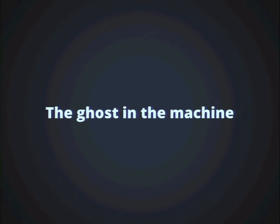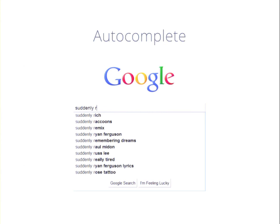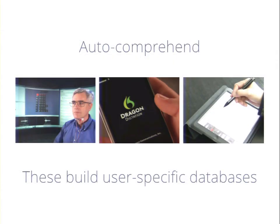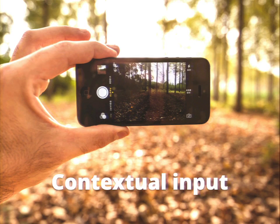Additionally, there's a lot happening around the intelligence of the device or application. We have auto-complete, auto-correct — which gets a lot of humor on the internet — and essentially auto-comprehend tools that figure out what you're going to say and auto-fill those in. One of the interesting things about these tools is that they all compile a database on you and your specific habits, and use that to build recognition and improve it over time. Nuance's tools do this — building a database specific to you, not general.